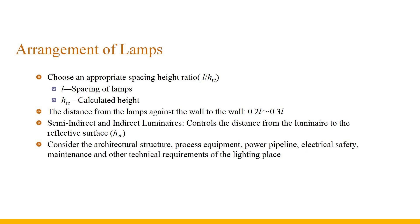The arrangement of lamps for general lighting achieves uniform illuminance by selecting an appropriate spacing-to-height ratio, which refers to the ratio of the luminaire spacing L to the calculated height. In order to keep the illuminance around the room from being too low, the distance from the lamps near the wall to the wall should be controlled within the range of 0.2L to 0.3L. Semi-indirect and indirect luminaires need to control the distance from the luminaire to the reflective surface, such as the ceiling, to ensure uniform illumination on the reflective surface. The layout of lamps should also consider architectural structure, process equipment, power pipelines, electrical safety, maintenance, and other technical requirements.